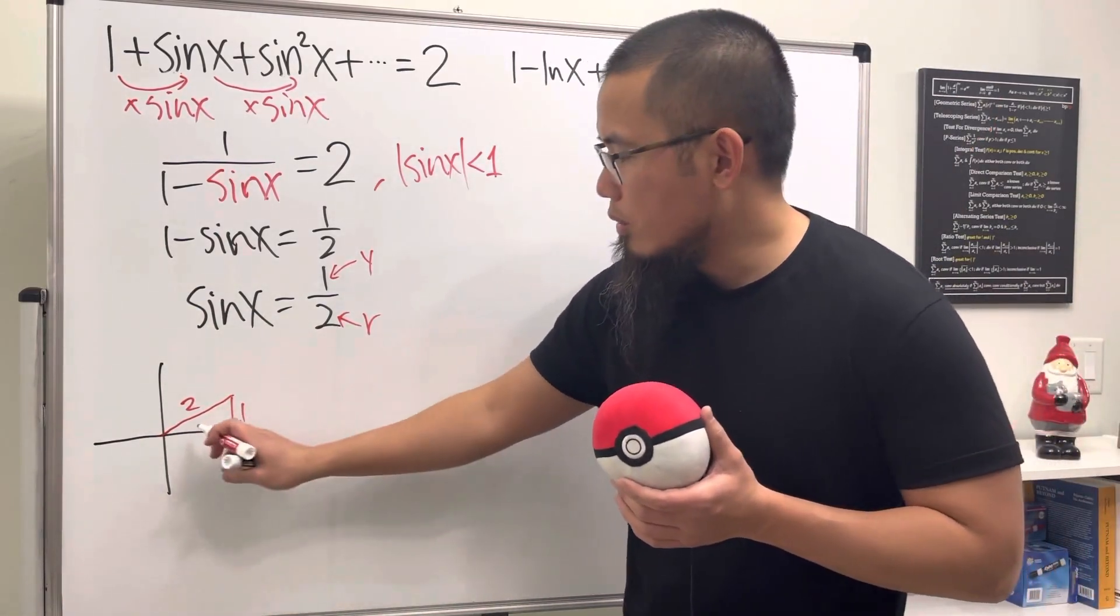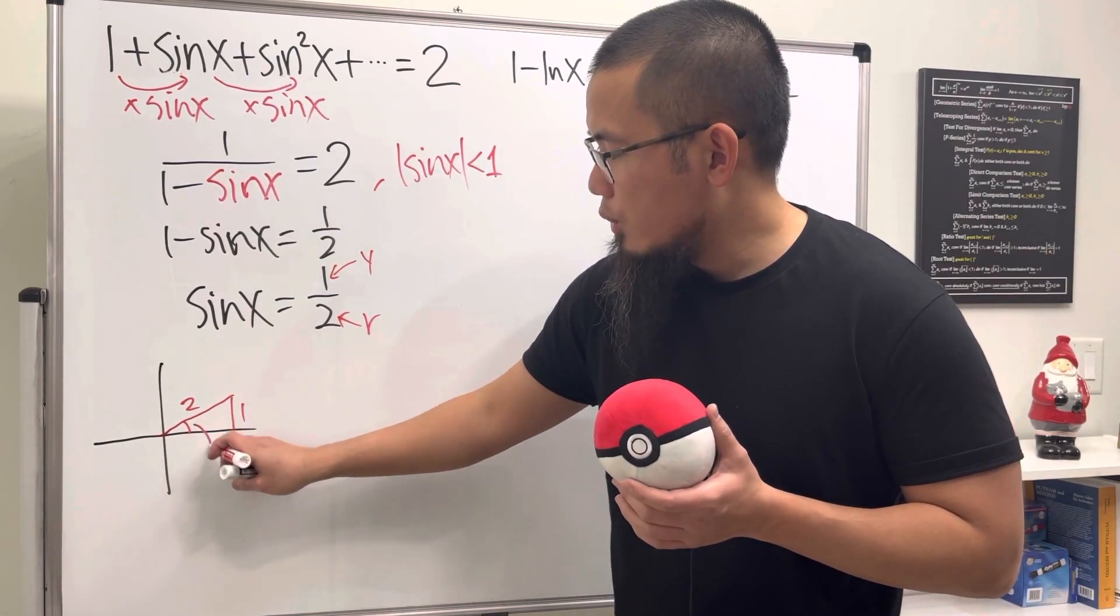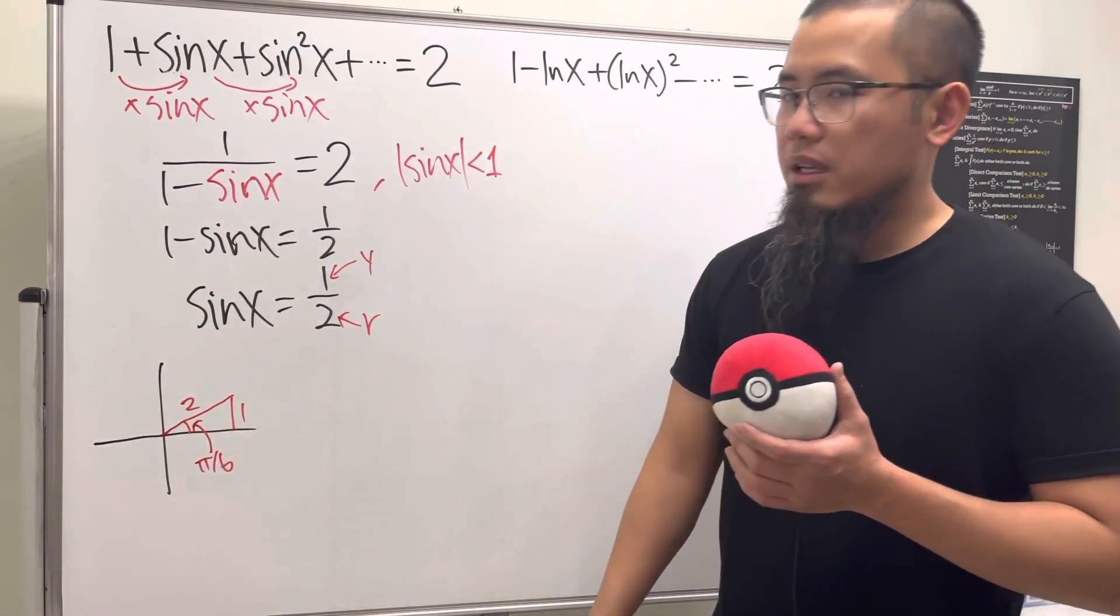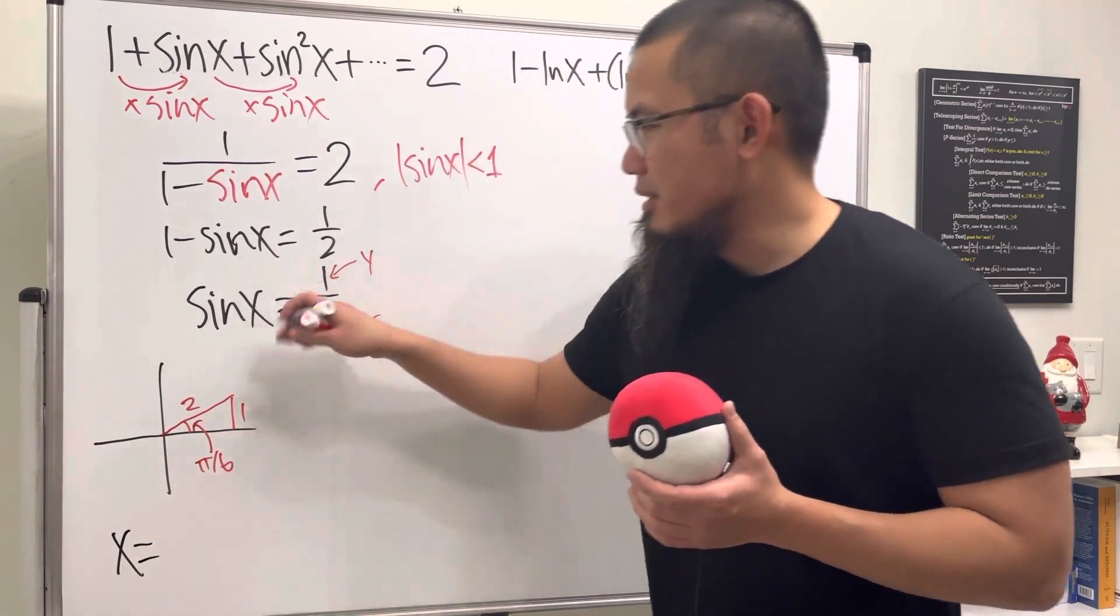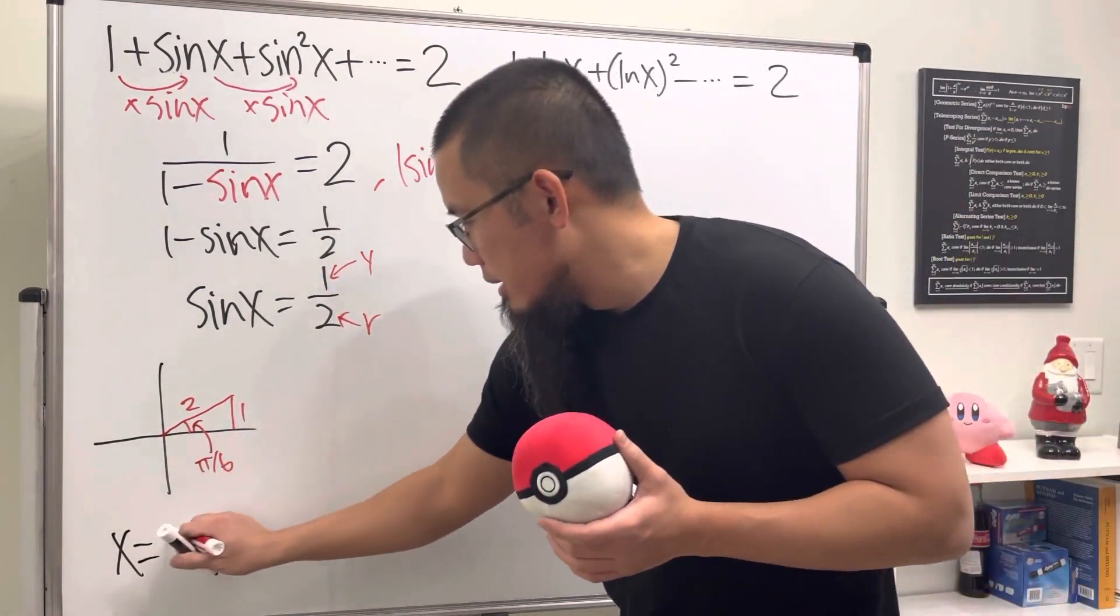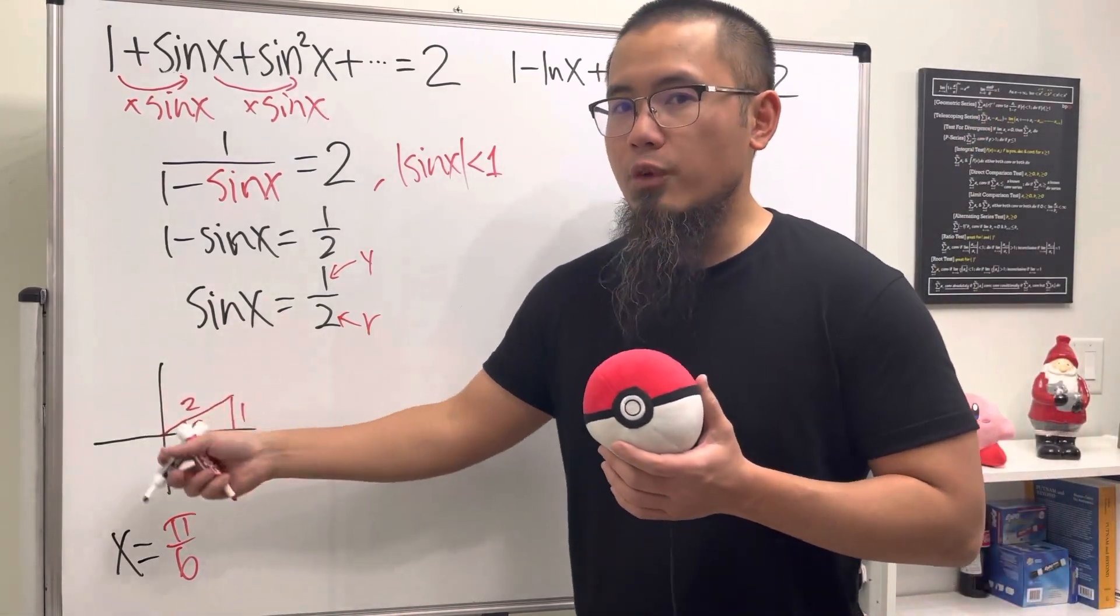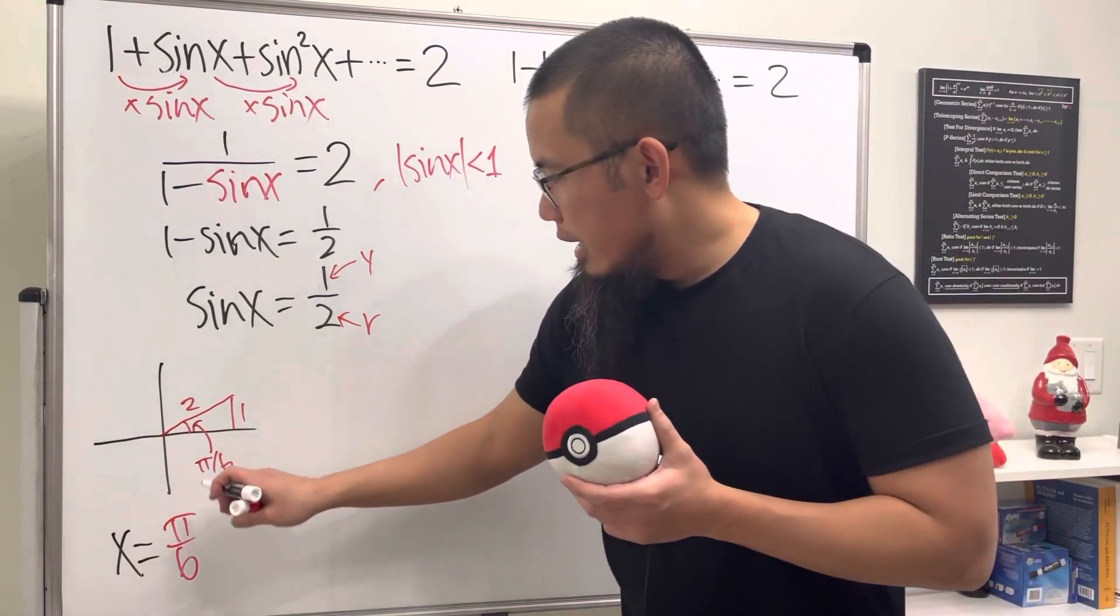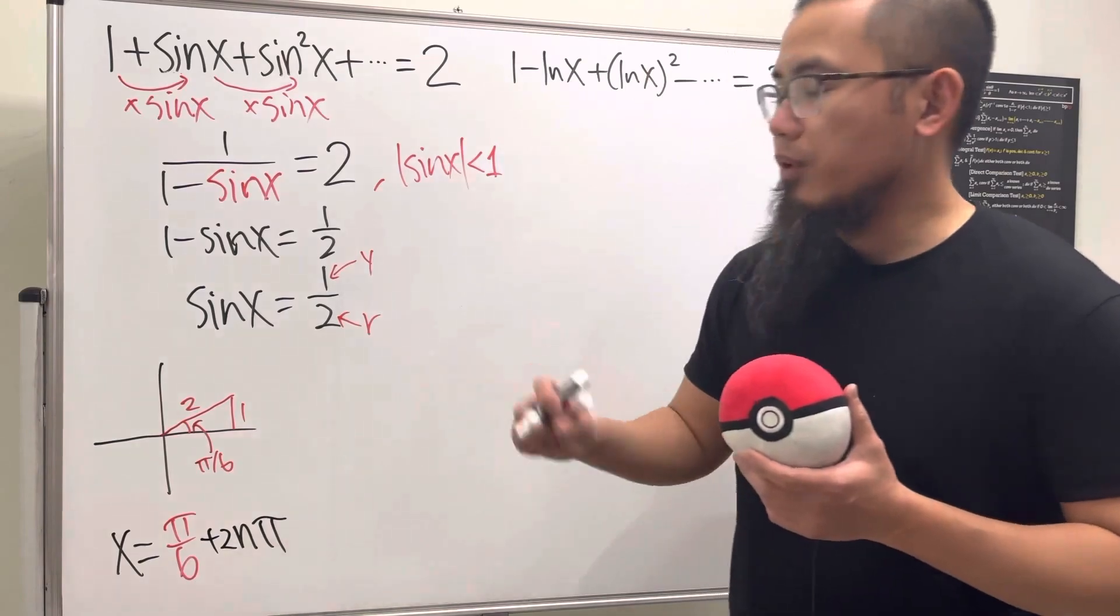And this is the special right triangle 30-60-90, and this right here is the 30 degrees, which is π over six. So as you can see, this angle right here, technically the x right here, is π over six. But of course we're not done yet, because we can keep rotating whichever way we want, 2π times whichever many times you want. And you can just go ahead and add 2nπ and then you're done for that.